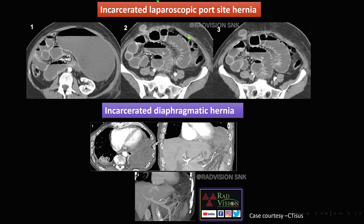Next, you can see this is an incarcerated laparoscopic port site hernia. Here also you can see herniation of bowel loops into the thorax — there is a defect in the diaphragm with abrupt cutoff of vessels at the level of the diaphragmatic defect. This was a case of incarcerated diaphragmatic hernia.